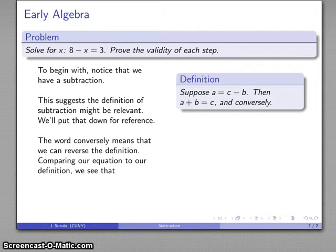Well, let's take a look at that. Now I'll compare the equation that we have, 8 minus x equals 3. And I'll make the observation that a, this thing all by itself, that must be 3. 8 must be our c term. And x, that's b. So I have a equals 3, c equals 8, b equals x.